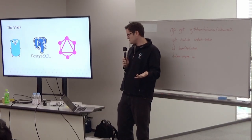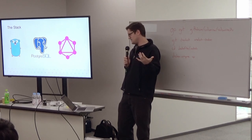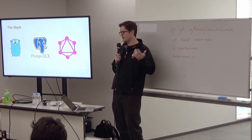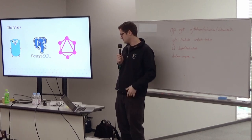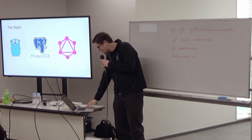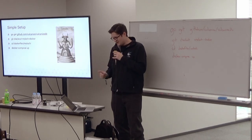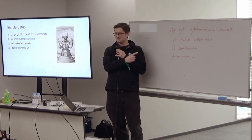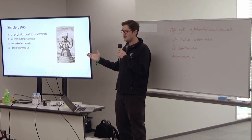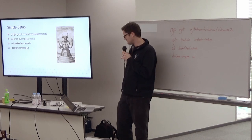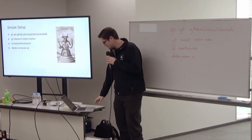Walking through our stack: VulcanizeDB is written in Go, which is nice because it lets us really easily integrate with go-ethereum for unpacking logs and so forth. We use Postgres and GraphQL. This setup is exactly what it says on the board — try it out at the hotel or at home; we're definitely interested in getting feedback on it.